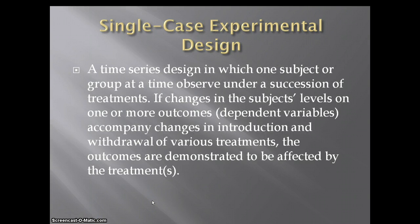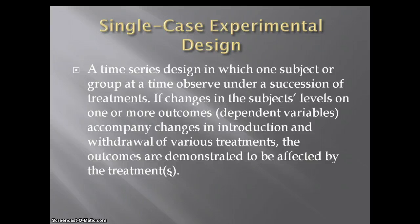The most common type is called a single case experimental design. This is where you have one subject, or maybe just a couple of people, and you're trying to narrow down a change in a specific behavior — you want to know whether or not what you're doing is making a change in that behavior. This is much different than looking at large groups of people; this is looking at one very specific individual with a specific behavior problem.